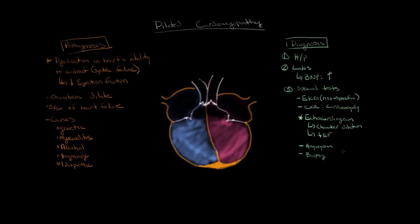To summarize: dilated cardiomyopathy is a dysfunction in the heart's ability to contract, making it a systolic heart failure that manifests as a decreased ejection fraction. The heart compensates by dilating its chambers — which is why it's called dilated cardiomyopathy. It is diagnosed primarily with an EKG, a chest X-ray, and most definitively with an echocardiogram.